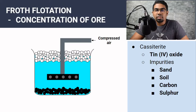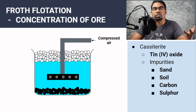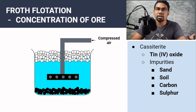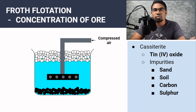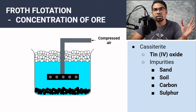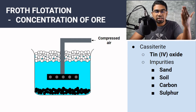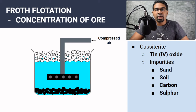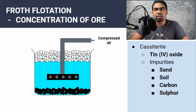If the metal ore contains a high degree of impurity, what is normally done first before the extraction process is the concentration process — the concentration of the ore — so that we remove a large portion of the impurity first. One of the methods to achieve that is by froth flotation.